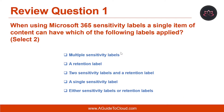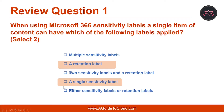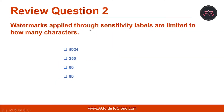Let's look at the first question. When using Microsoft 365 sensitivity labels, a single item of content can have which of the following labels applied? Select two. The right answers are: a retention label and a single sensitivity label.